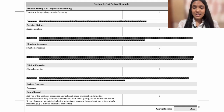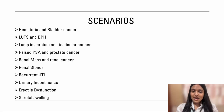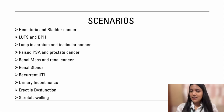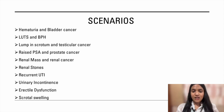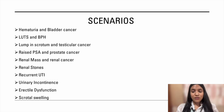The outpatient scenarios you need to prepare include: hematuria and bladder cancer, LUTS and BPH, lump in scrotum and testicular cancer, raised PSA and prostate cancer, renal mass and renal cancer, renal stones, recurrent UTI, urinary incontinence, erectile dysfunction, and scrotal swelling. This is not an all-inclusive list, so make sure you prepare for everything.